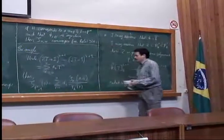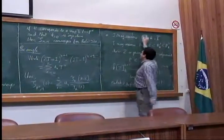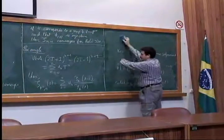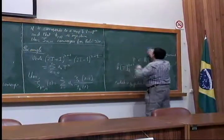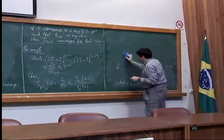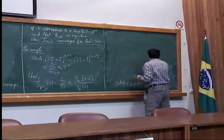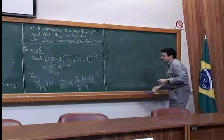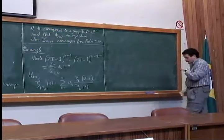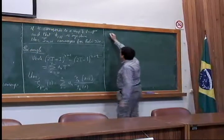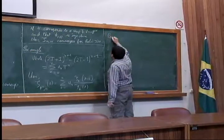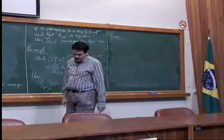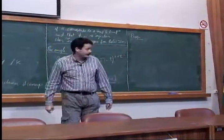Generally, the height zeta function doesn't have such a nice expression. You have to choose the height very carefully. For some varieties, it's impossible even with a careful choice. The proof is completely elementary, so I leave it as an exercise.